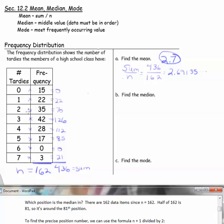Which position is the median in? There are 162 data items, since n equals 162. Half of 162 is 81, so the middle is around the 81st position.